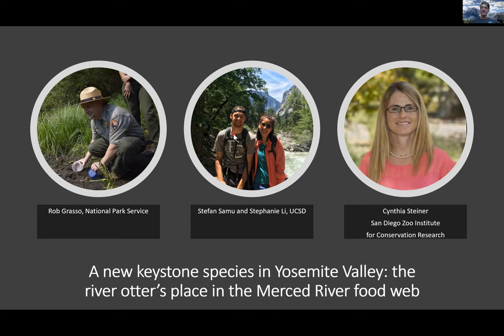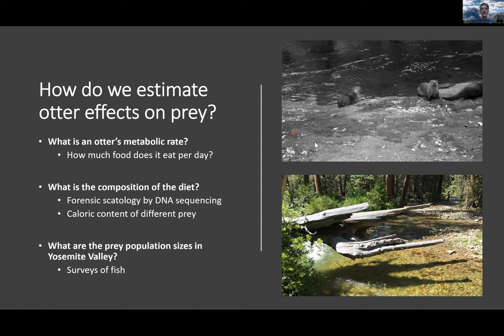Rob told me that river otters had started being seen throughout Yosemite Valley. He was concerned because the park actively manages for endangered species like red-legged frogs and western pond turtles, and you can certainly imagine otters eating turtles and frogs. So I started a project with graduate students Stefan Samu and Stephanie Lee, who spent the summer trying to understand the potential effects of river otters on the Merced River ecosystem. We also started collaborating with Cynthia Steiner, a geneticist at the San Diego Zoo Institute for Conservation Research, who uses genomic tools to ask ecological questions.